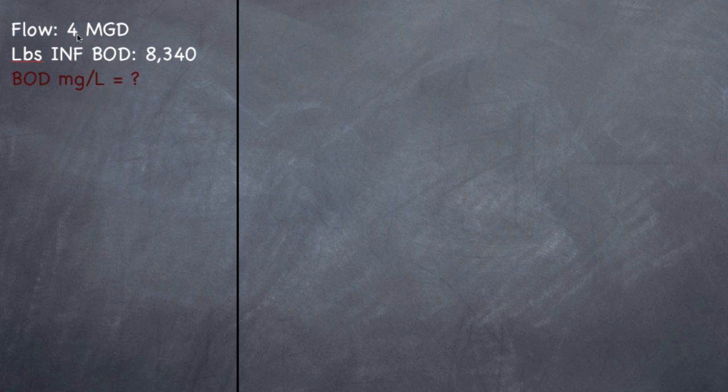So let's go on to the next question, which is going to be what I was talking about where if you cover up this and they give you this, you divide to find out the concentration. So here we go, they give you a flow of 4 MGD and they give you pounds, 8,340. And they want to know the BOD concentration in milligrams per liter.